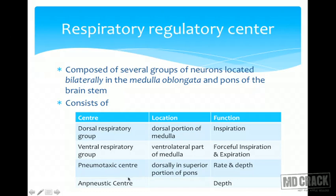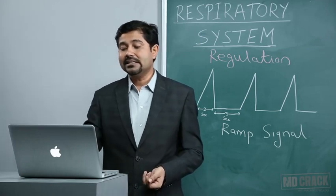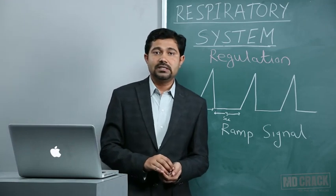The pneumotaxic center — 'pneumo' meaning air, regulating the rate — mainly regulates the rate and depth of respiration. It acts over the dorsal and ventral respiratory groups to change the rate and depth, and is situated dorsally in the superior portion of the pons. The apneustic center, situated between the pneumotaxic center and other respiratory centers, monitors depth of respiration. Apnea means stoppage of breathing in a deep state of inspiration — stimulating this center causes respiration to stop in deep inspiration.